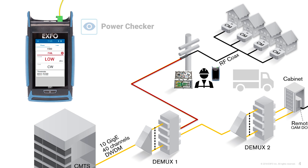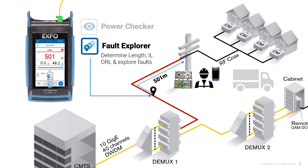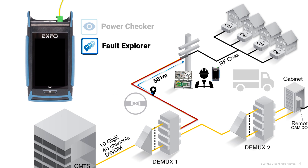Since there is no light, which confirms our cut fiber theory, we'll then need to locate the cut. With the OX1 already connected to the node, we can switch over to fault explorer mode and run a five second test to determine the length to the cut. At this point the restoration team can be deployed based on this optical length as well as SSP geolocation of the fiber plant.